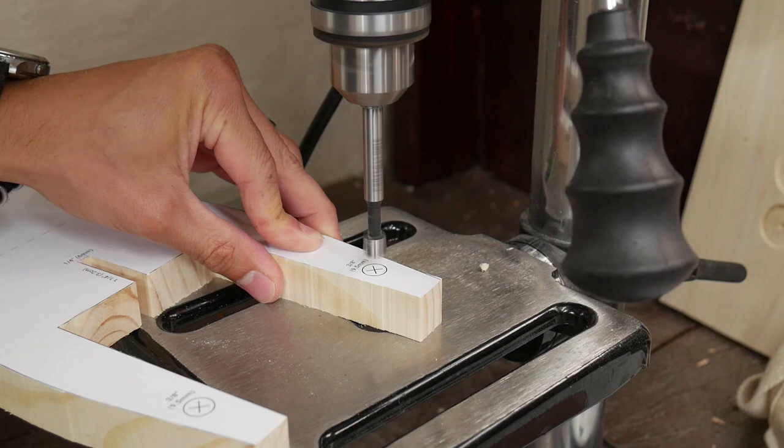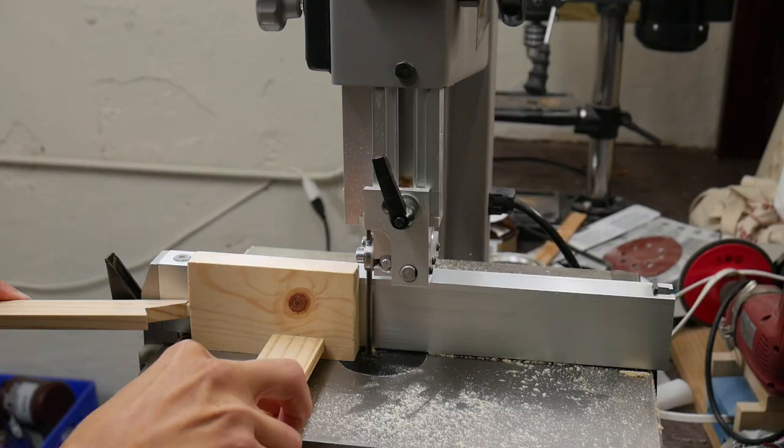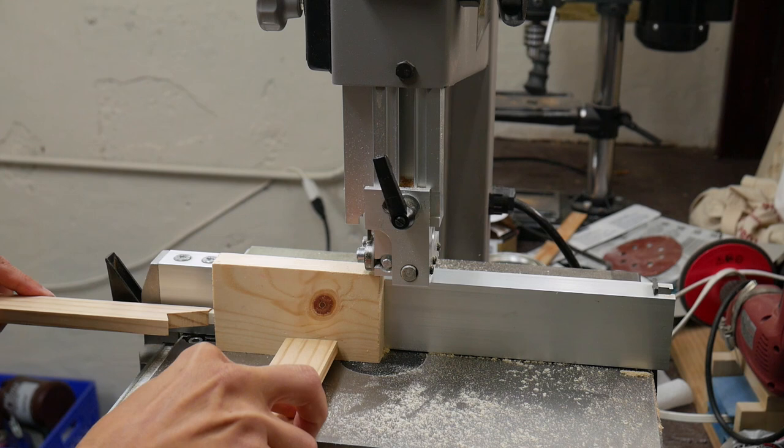Then I used a three-eighths inch forstner bit to drill two holes at the stern of the boat that go about halfway through the wood. I resawed the small piece of wood into three even pieces, each of which ended up being about a quarter inch thick.